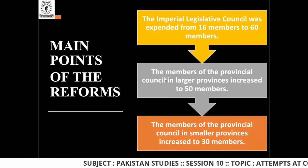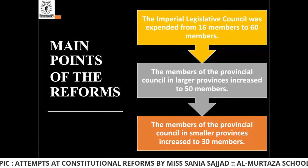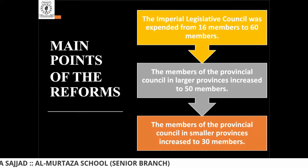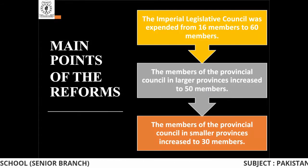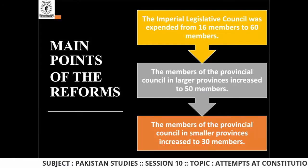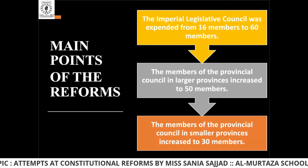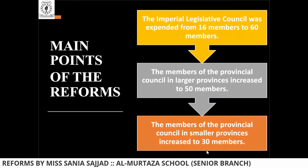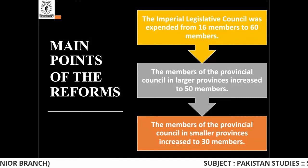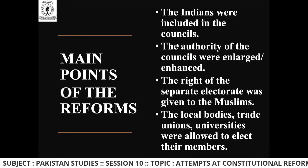The members of the provincial council in large provinces increased to 50 members, covering all those provinces lying under the subcontinent. The members of the provincial council in smaller provinces increased to 30 members. When there were large provinces it increased to 50 members; from smaller provinces, only 30 members were allowed to participate.